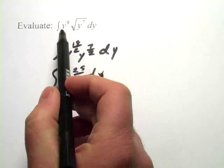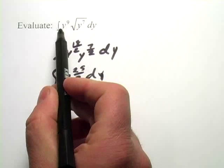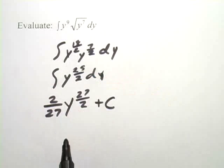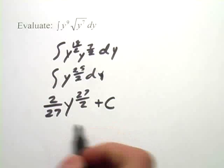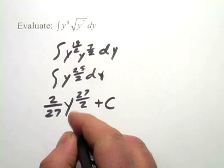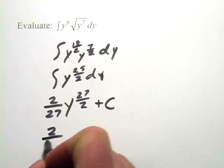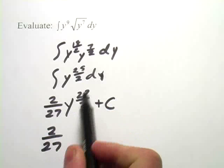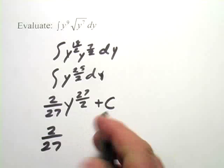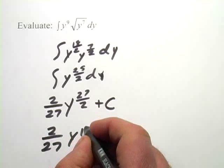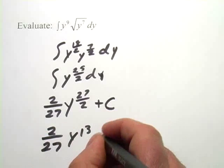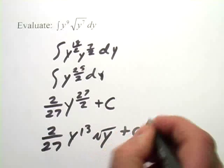And then since we started out with this form, where y to some power plus a square root of y, let's go ahead and do that here. So we've got 2 27ths. And let's see, 26 halves would be y to the 13th. And that would leave over just a square root of y and our constant.